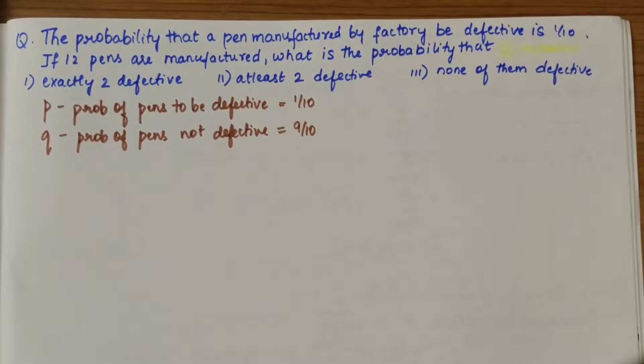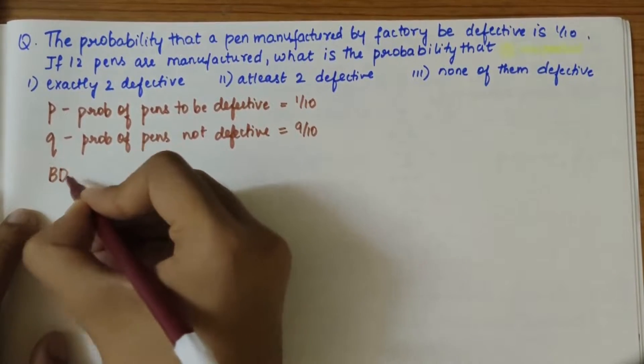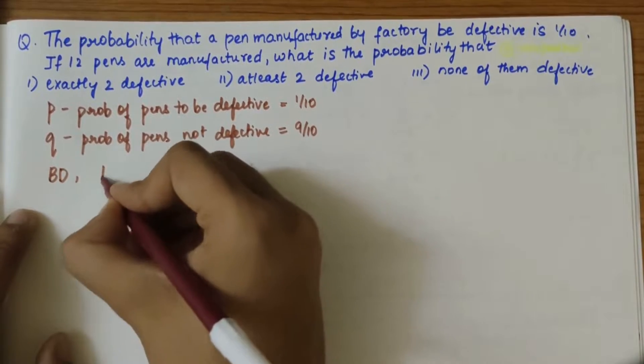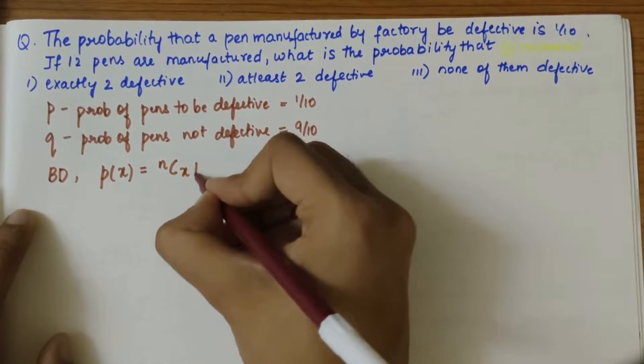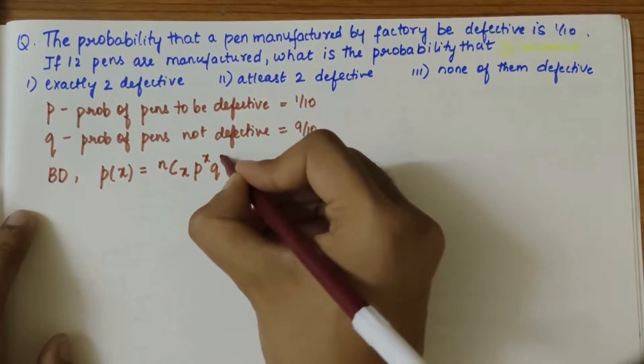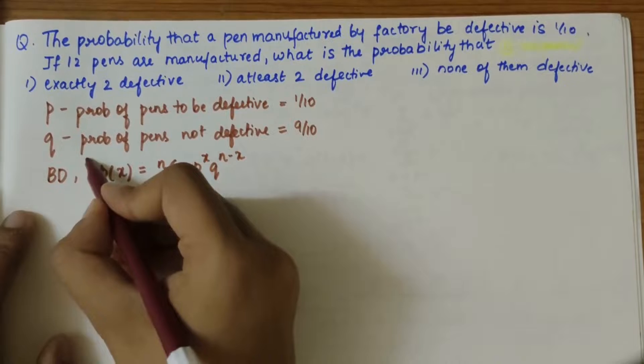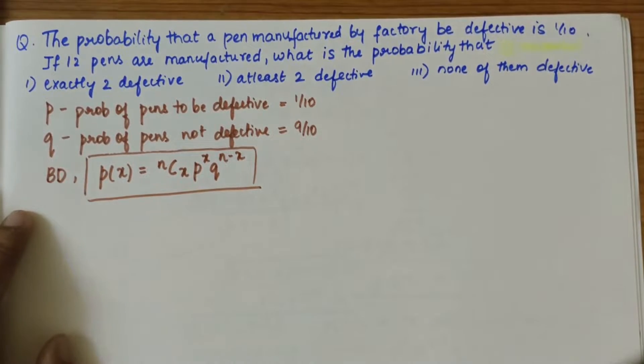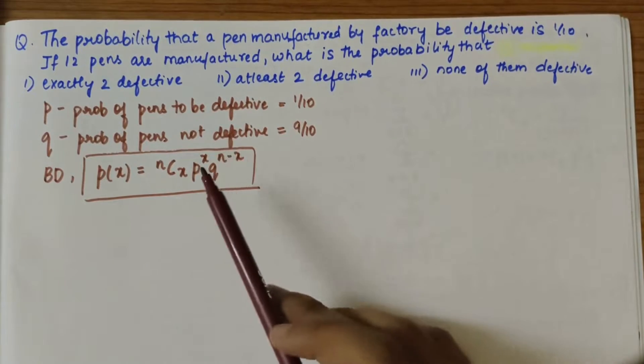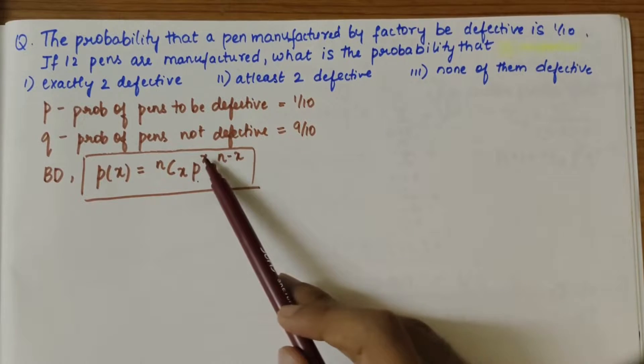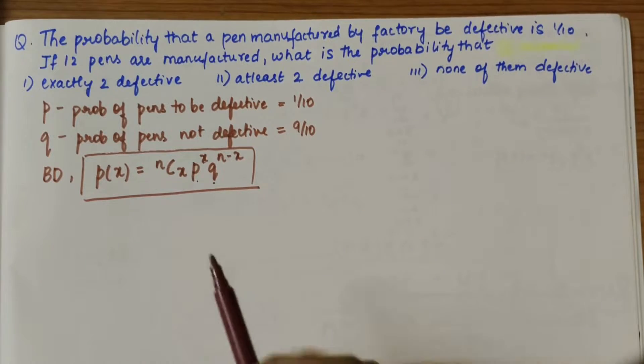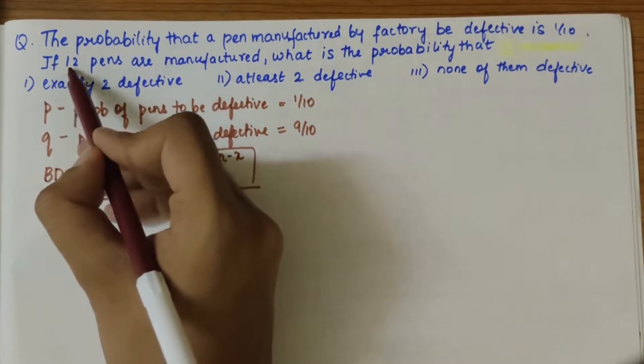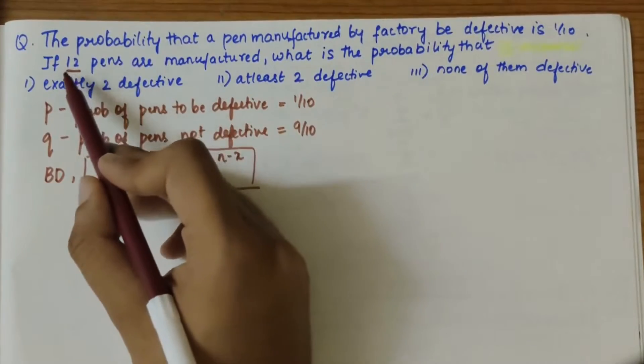Now once we have the values of P and Q, we should get into the binomial distribution formula. Using binomial distribution we can write P(X) = nCx P^x Q^(n-x). We know the value of P, we know the value of Q, X values are given in the three conditions. Now we should look into the value of n. From the question statement we can see that 12 is n, the number of pens manufactured.